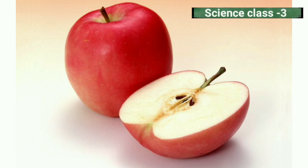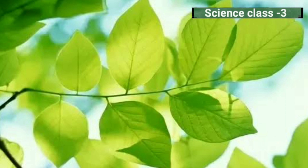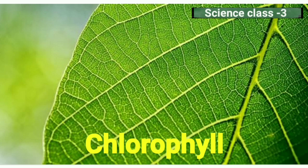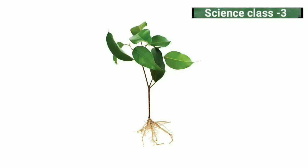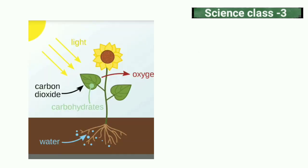Let us know some facts about leaf. The green substance present in leaves is called chlorophyll. It helps the plant to prepare its food with the help of air, water, and sunlight by the process of